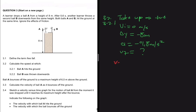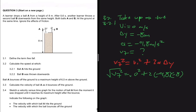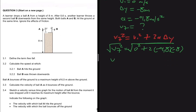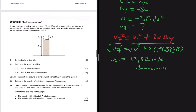With these four variables, the equation we can use is vf² = vi² + 2aΔy. So vf² equals zero squared plus 2 multiplied by minus 9.8 multiplied by minus 8. Taking the square root of both sides, we get vf equal to 12.52 meters per second downwards — the velocity at which the ball strikes the ground.